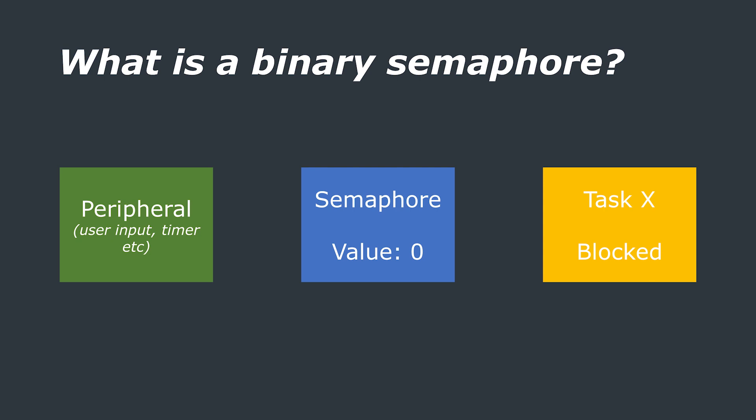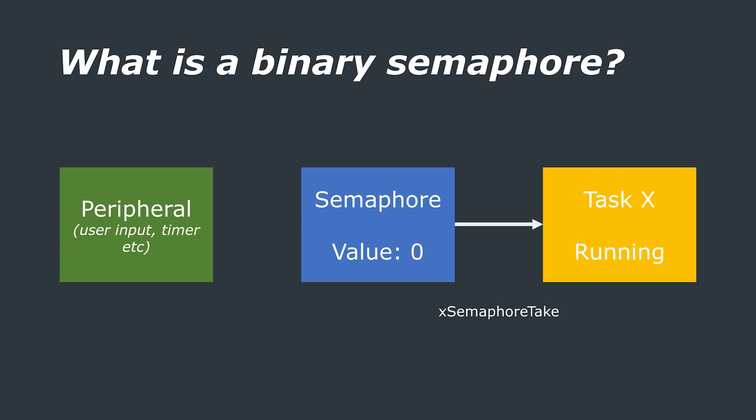This can be implemented by making the task block whilst it tries to take the binary semaphore. An interrupt routine is written for the peripheral that simply gives the semaphore when there is something to do. The task can then take this semaphore and service the peripheral. The task never gives the semaphore back, and this is an example of synchronization using a binary semaphore.